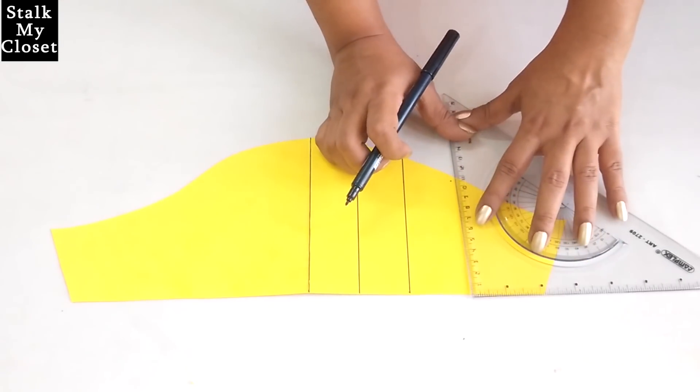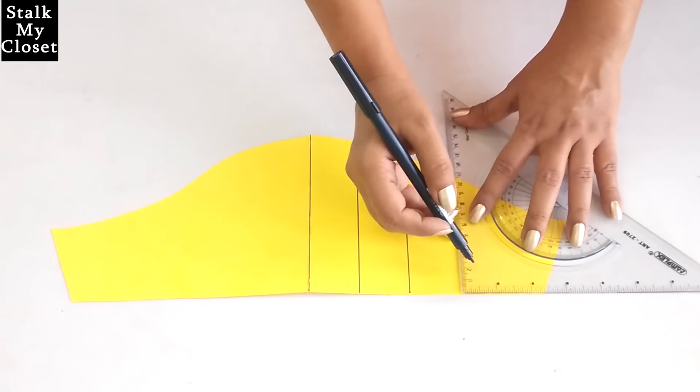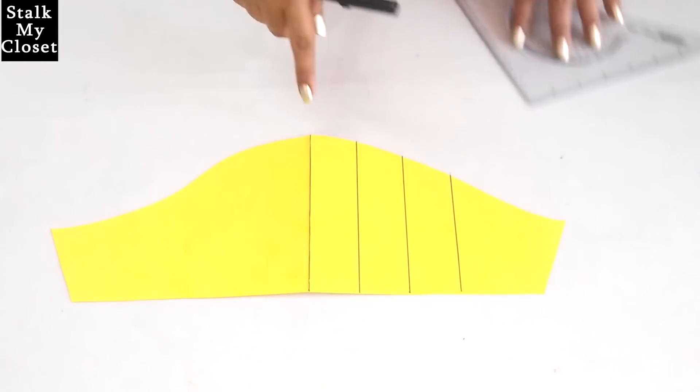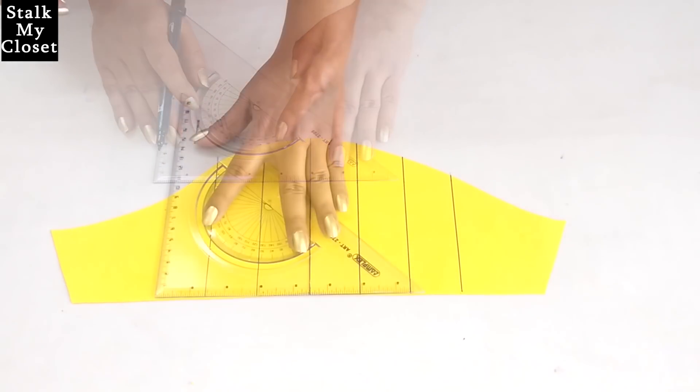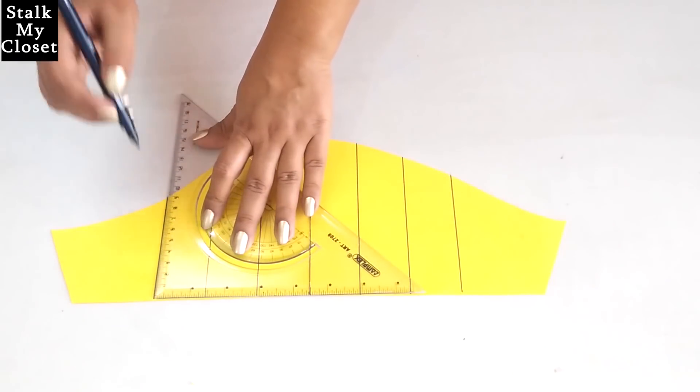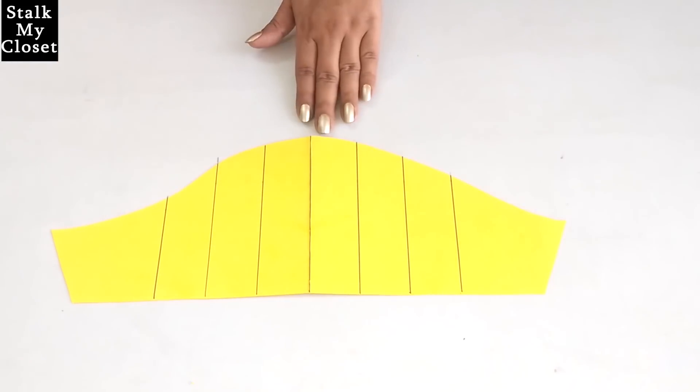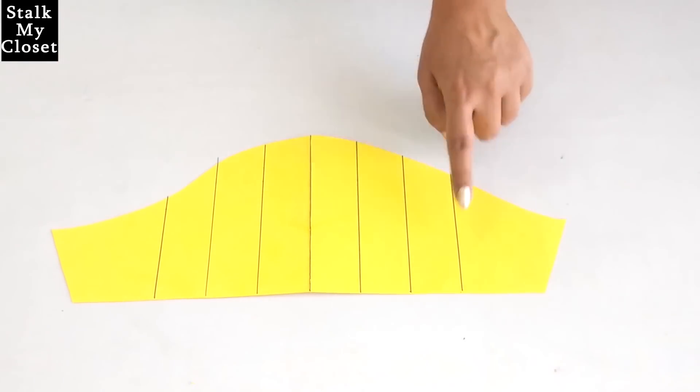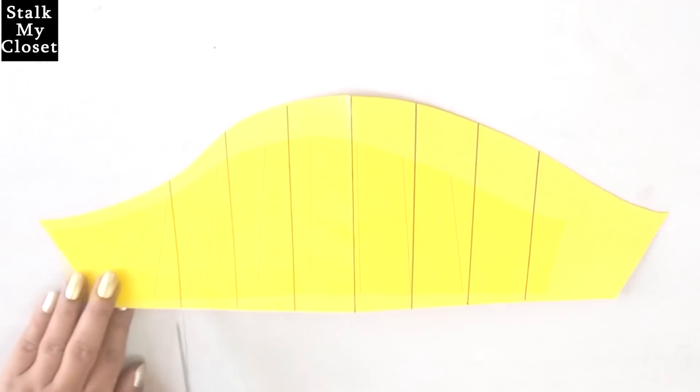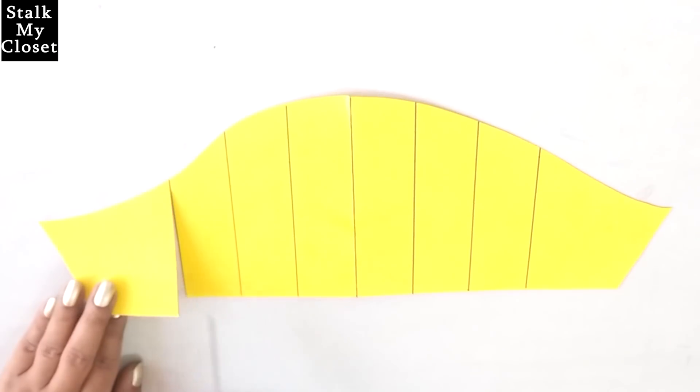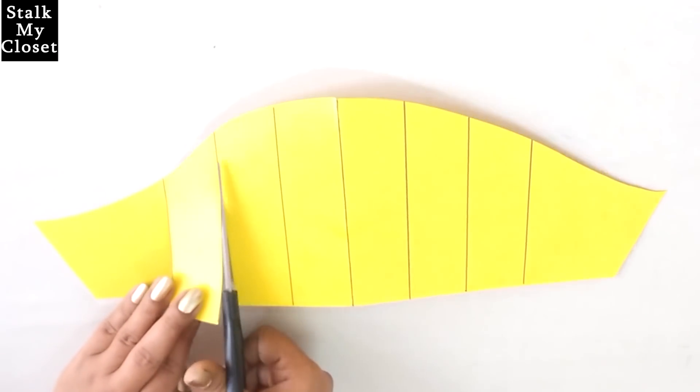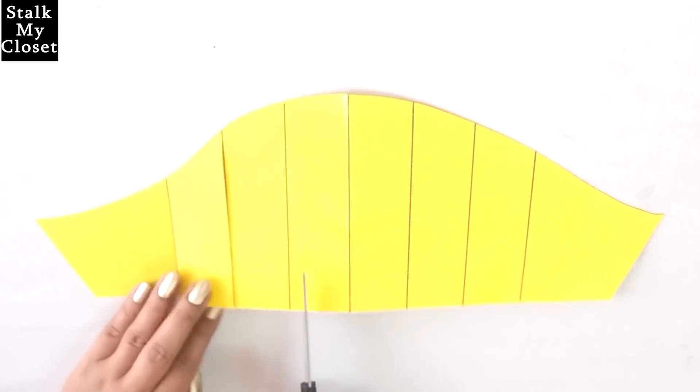Similarly, I'll mark it on the other side. So I have marked lines. Now cut all lines from bottom to the top, leaving a tiny amount on the top like this, as we need to spread open the pattern to create volume in the sleeves.